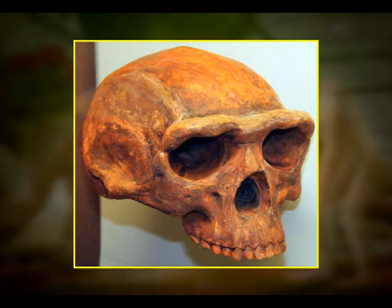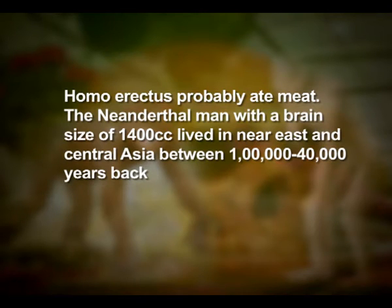A fossil discovered in Java in 1891 revealed the next stage — Homo erectus — about 1.5 million years ago. Homo erectus had a large brain of around 900 cc and probably ate meat. The Neanderthal man, with a brain size of 1400 cc, lived in the near east and central Asia between 100,000 to 40,000 years ago. They used hides to protect their bodies and buried their dead.